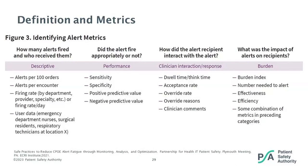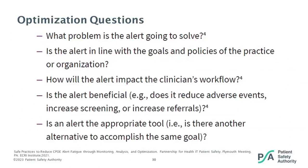This slide provides specific examples of what information may be useful to evaluate when assessing a clinical alert. Valuable metrics include analyzing how many alerts have fired and who they fired for, identifying if the alert is firing as intended and if the logic should be evaluated, and noting what action was taken and if the intended outcome was achieved.